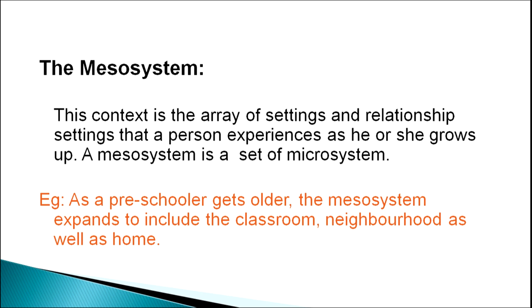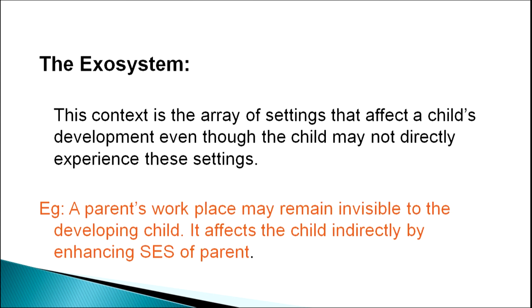The mesosystem is the area of settings and relationships that a person experiences as he or she grows up — it is a set of microsystems. For example, as a preschooler gets older, the mesosystem expands into the classroom, the neighborhood as well as the home. The exosystem refers to settings that affect a child's development even though the child may not directly experience them. For example, a parent's workplace may be invisible to the child but affects the child indirectly by enhancing the family's socioeconomic status, making the home environment more comfortable and peaceful.